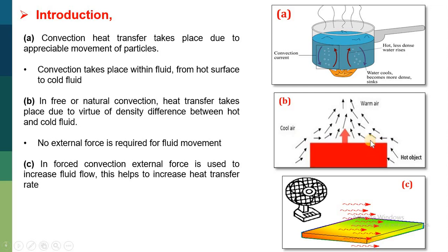During heat absorption, the air density decreases and it will move upward. This air is known as warm air. Naturally, the cold air will again come in contact with the hot object and transfer the heat. This is natural heat transfer, so it is known as free or natural convection.